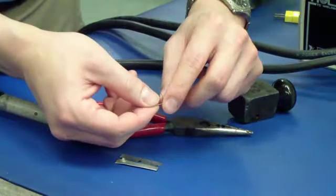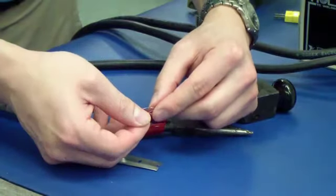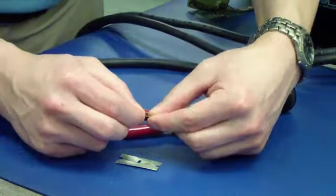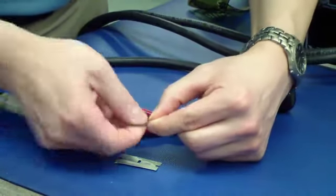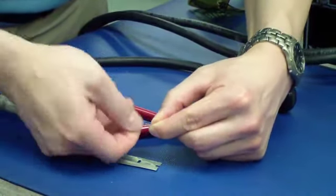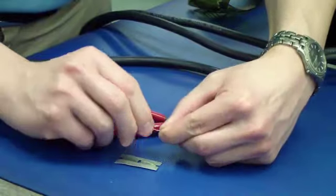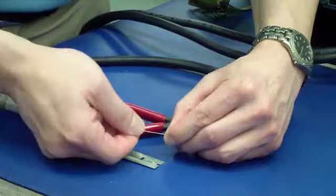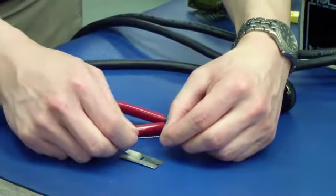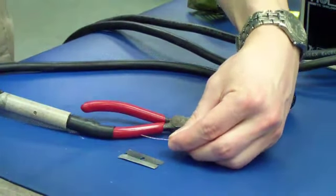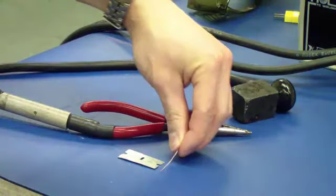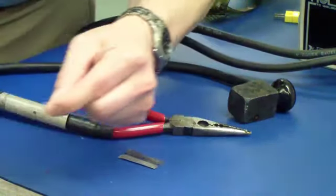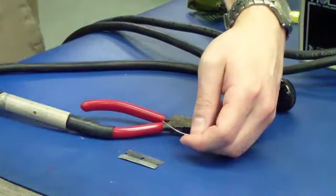When you've removed the insulator from the conductors, the next step is to twist the two wires together. Now this is a bit long, so we'll cut off the excess. About a quarter of an inch is a good length.